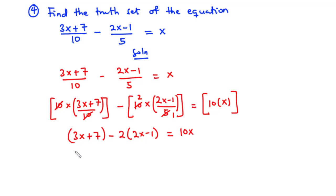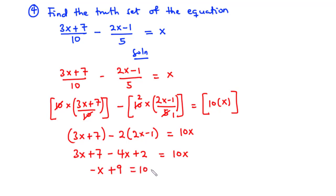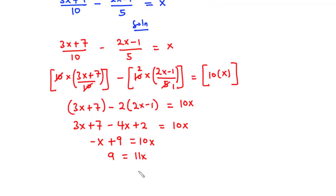Now let's simplify. We have 3x plus 7 minus 4x plus 2 equals 10x. Combining like terms on the left: negative x plus 9 equals 10x. Transposing negative x to the right: 9 equals 11x. Dividing through by 11, we get x equals 9 over 11. So the truth set for this equation is: x such that x equals 9/11.